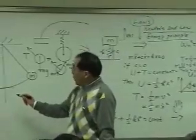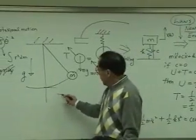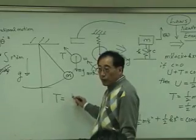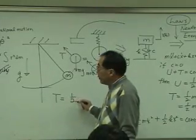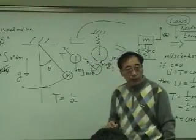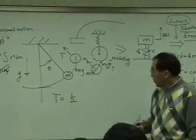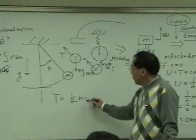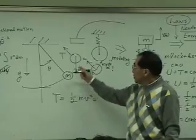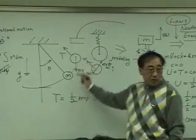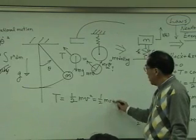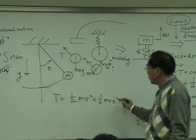But if you use energy principle, then you can write the kinetic energy of this system is one half. If I use coordinate theta over here, M V squared. And the V, you know that this is the velocity in this direction. Therefore, the velocity in this direction has to be M R theta dot.